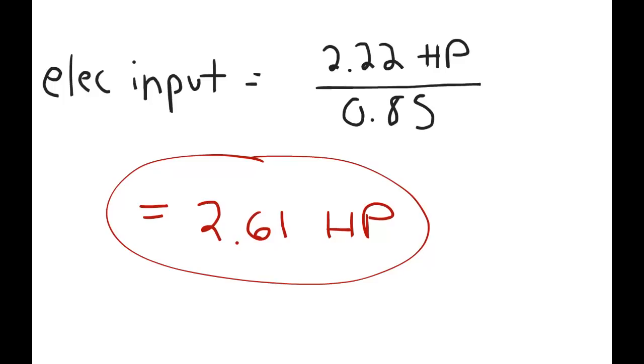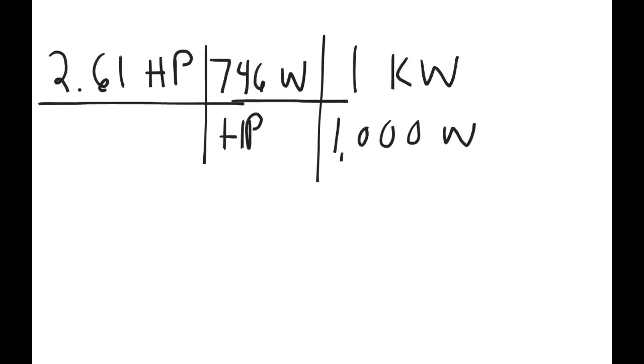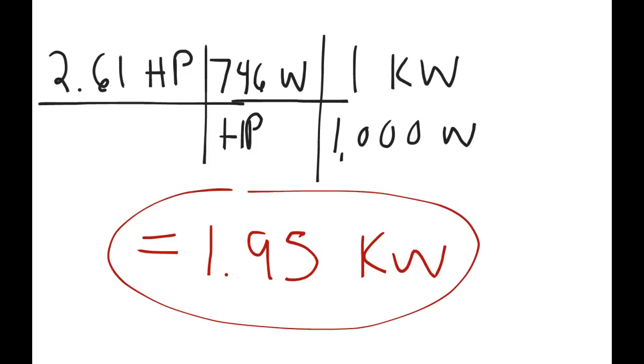Now, of course, we have to convert this into kilowatts. You just have to set up a conversion equation. You have 2.61 horsepower, and for every horsepower is equal to 746 watts. Convert the watts into kilowatts by dividing by 1,000, and you get 1.95 kilowatts as the input power to the motor.